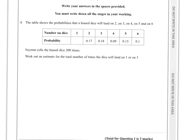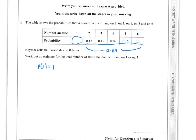Question 1. The table shows the probabilities that a biased dice will land on 2, 3, 4, 5, and 6. Well, 1 is missing from the table, but we can work that out. So if we just add all of these ones up, that works out to be 0.69 for all of these. So the probability that it would land on a 1 would be 1 minus 0.69, and that would be 0.31.